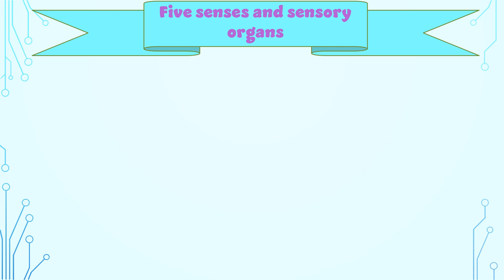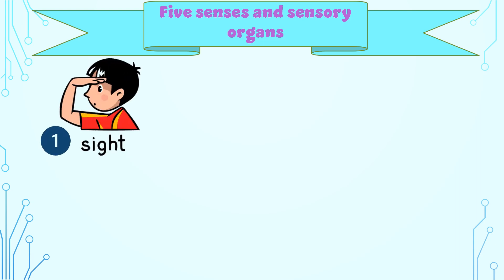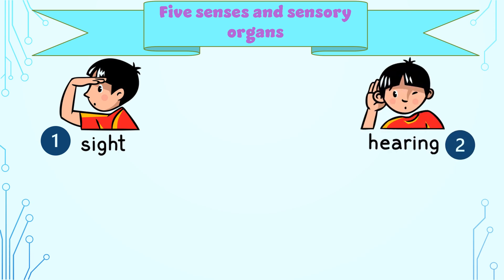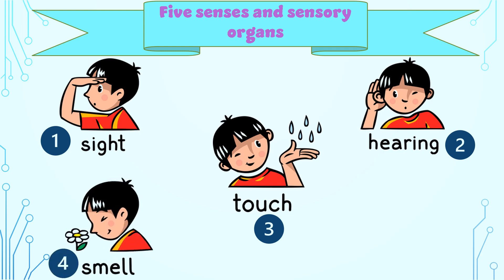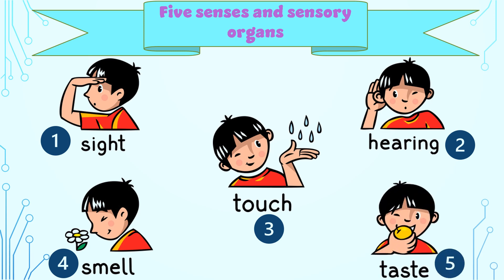Let's revise what we learned today. We learned five senses and their sensory organs. The first one is the sense of sight — eyes give us the sense of sight. The second one is the sense of hearing — ears give us the sense of hearing. The third one is the sense of touch — skin gives us the sense of touch. The fourth one is the sense of smell — our nose gives us the sense of smell. And the fifth and last one is the sense of taste — our tongue gives us the sense of taste.